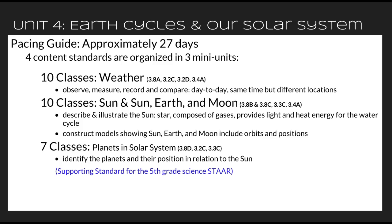We end the Unit 4 pacing guide with seven classes talking about planets in the solar system. This is a supporting standard for the 5th grade TEKS. This is the first time students have talked about the planets in the solar system, and they don't have it again until they review it for 5th grade. So it's important for us to spend some time. I've seen lots of different variations of this particular standard, so I'm going to talk about what the standard actually says and help guide you into hitting what we really need to.